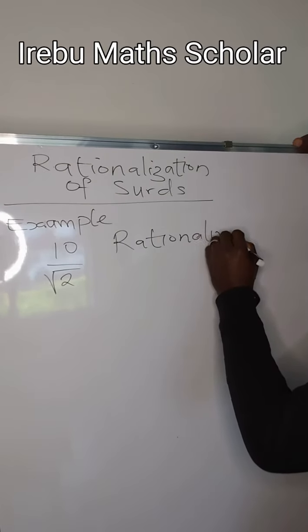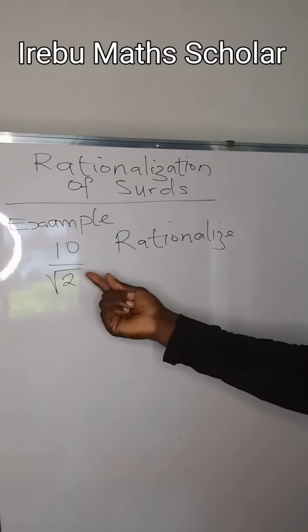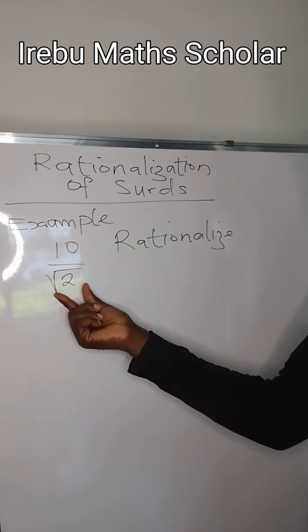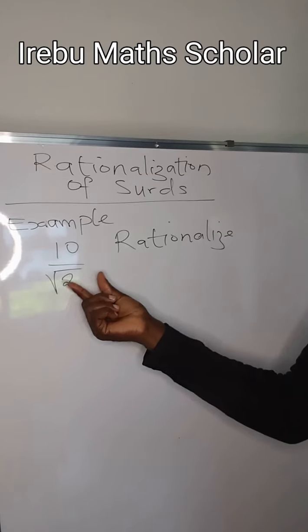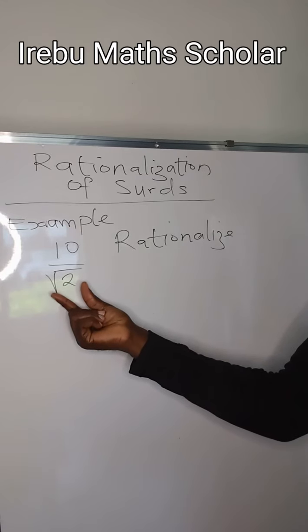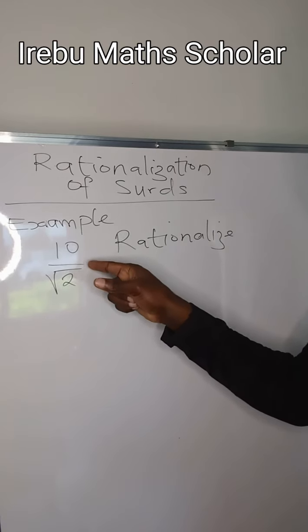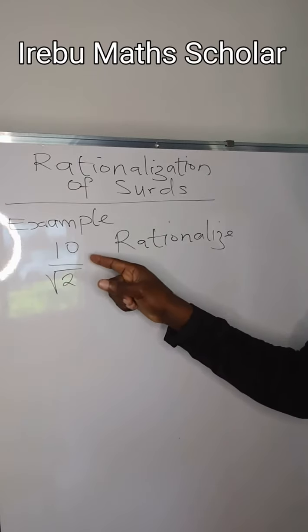What are we going to do? If you observe, we have 10 over root 2. The square root is at the denominator, and in standard practice, we cannot express our result in this format because it's not advisable to leave the square root at the denominator.